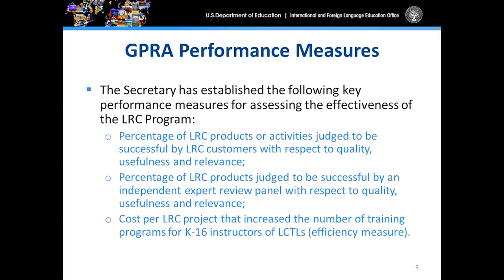Now I want to skip over to a government requirement that all government grant programs need to abide by, which is the Government Performance and Results Act — referred to as GIPRA — passed in 1993 and modernized in 2010 with the purpose of assessing and improving all federally funded programs. GIPRA requires that federal agencies document the achievements of our grant-funded programs and specifically requires agencies such as the Department of Education to develop and report quantifiable annual and long-term measures and outcomes to Congress. The measures must be limited in number, specific, have baseline targets, and be ambitious but achievable.